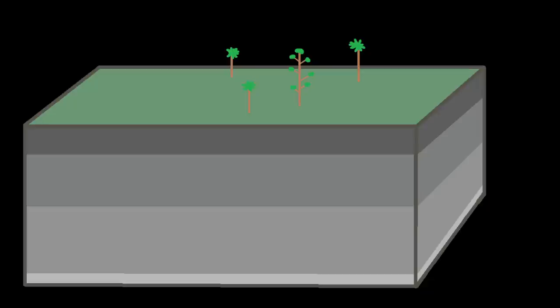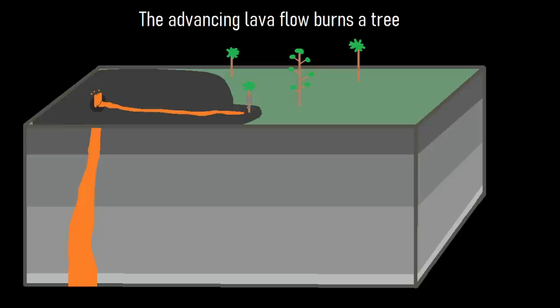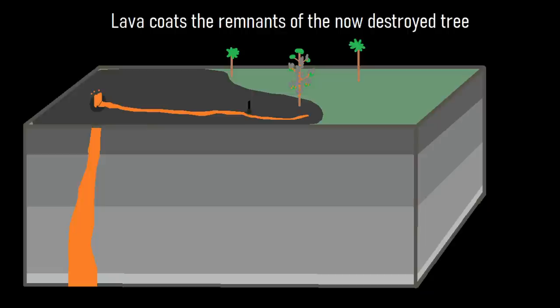Coming into contact with the tree, the heat from the lava quickly burns it. However, at the same time, pieces of molten rock cling to the tree due to the jagged surface of both the lava and the tree — before it begins to burn, and as it burns — forming a sort of cast. Over time, the lava slowly increases in thickness around the mold until it is several meters thick.